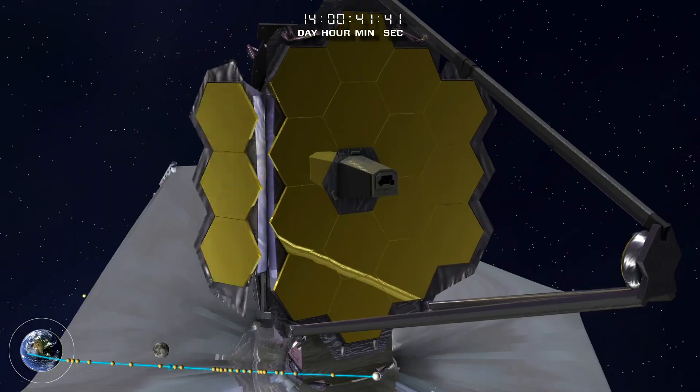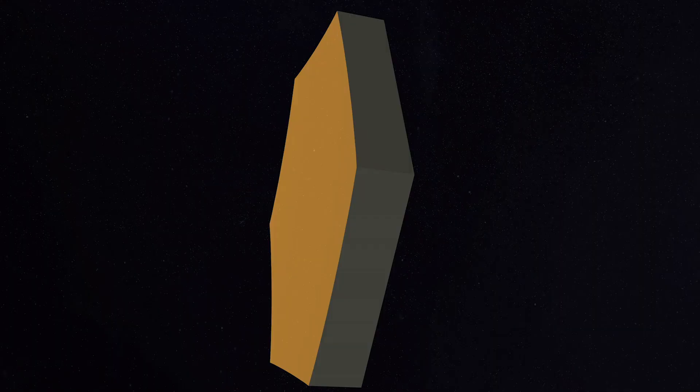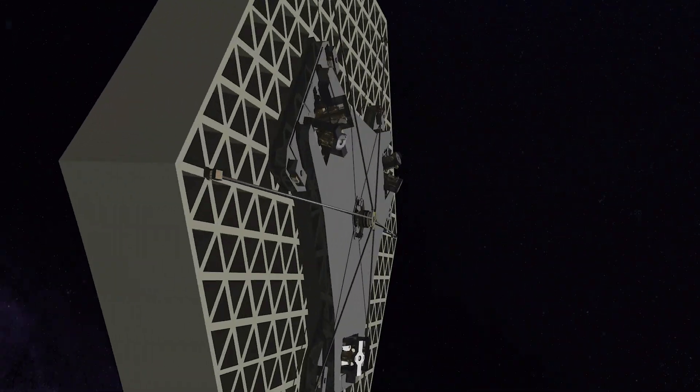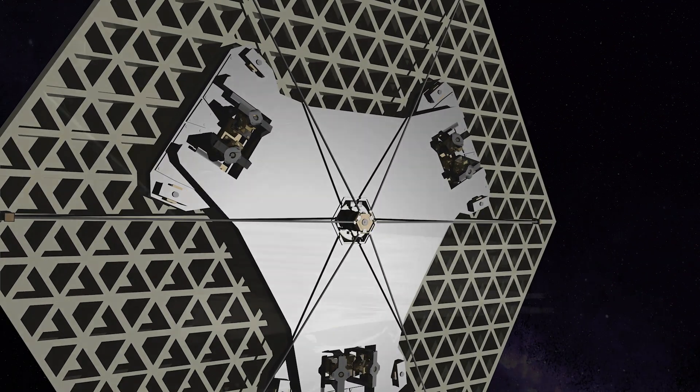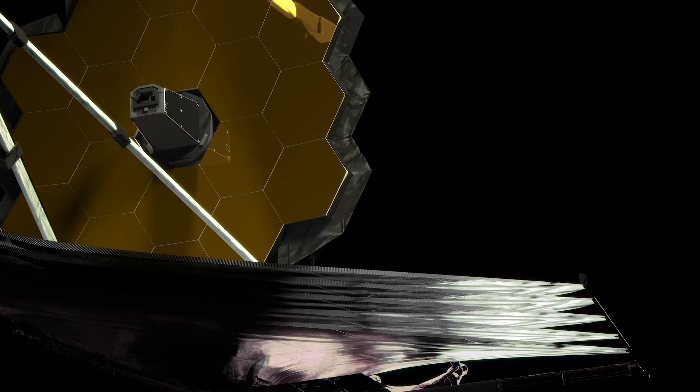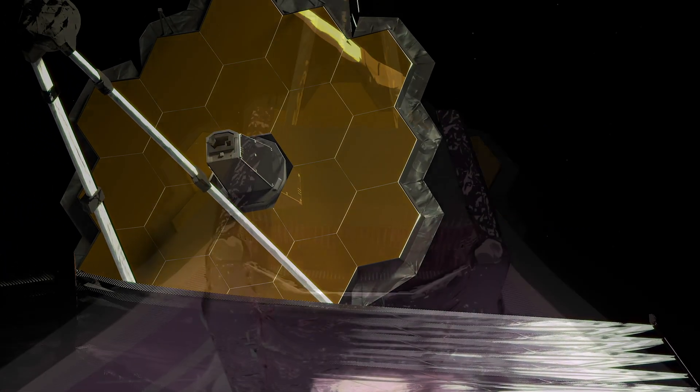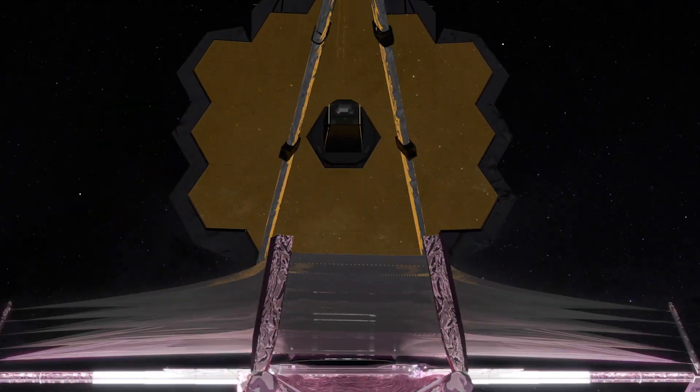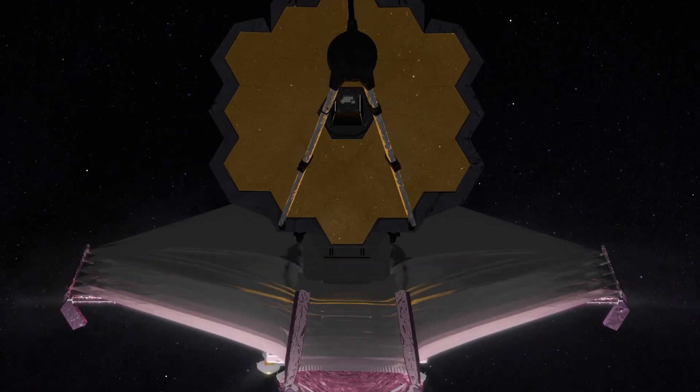After this delicate dance, Webb's golden mirrors are precisely aligned using motors behind each hexagonal mirror segment. Adjusting them to form one perfect mirror. Once the instruments are fully cooled, the exploration will begin.